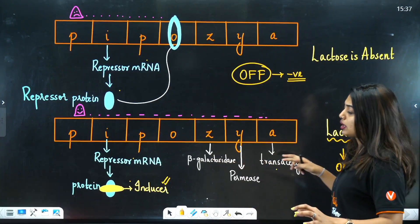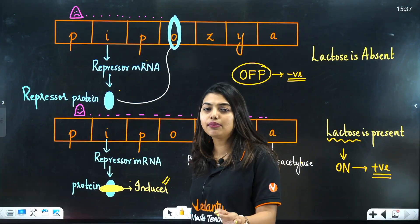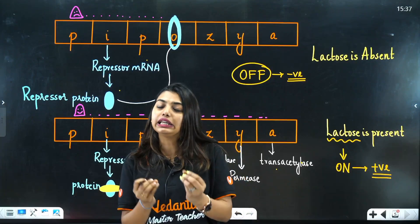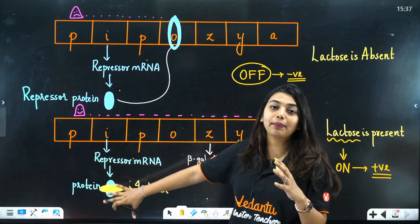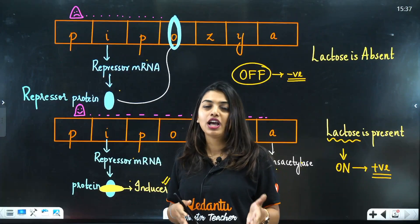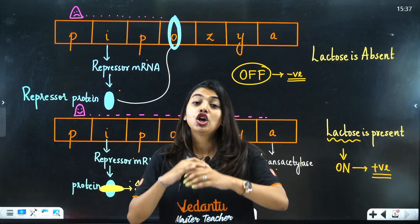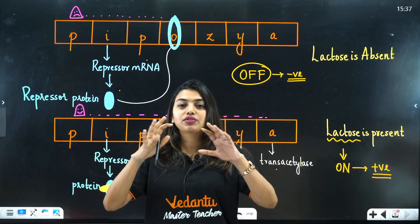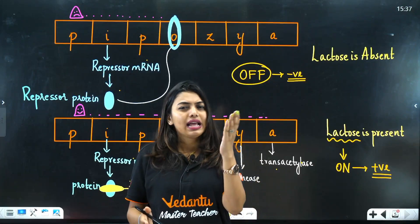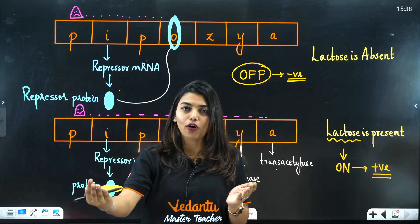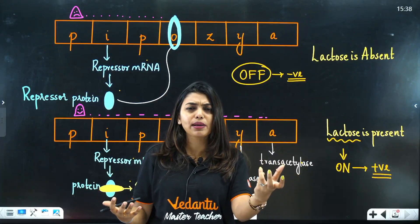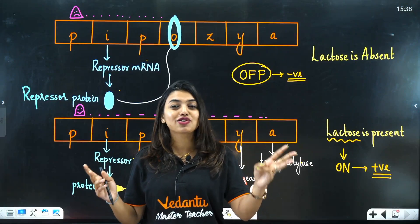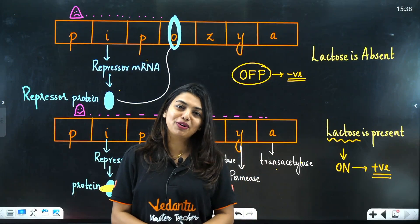A key point: how did lactose enter to act as an inducer in the first place? This is a leaky model — lactose enters through some leak, which Jacob and Monod could not fully explain. Once inside, permease increases uptake further. So to summarize: negative regulation is when the gene is switched off (lactose absent, repressor binds operator); positive regulation is when the gene is switched on (lactose present, inducer binds repressor, structural genes release beta-galactosidase, permease, and transacetylase).